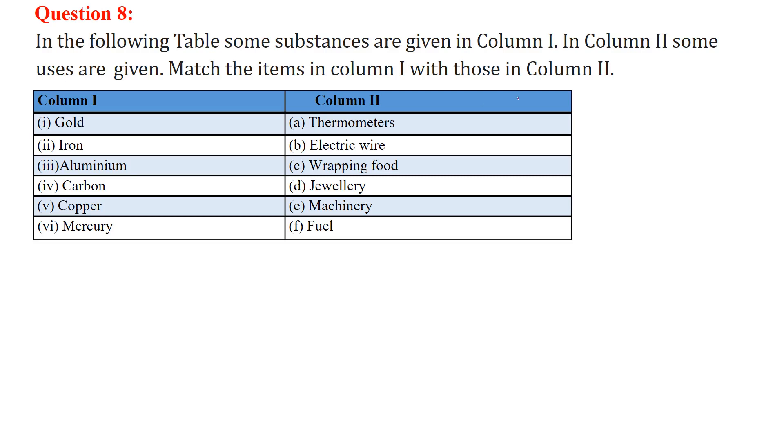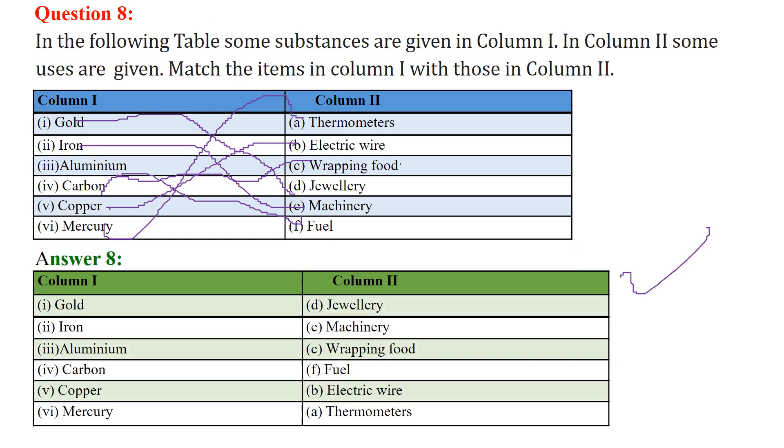In this we have to match the items or substances with their uses. So gold for jewelry, iron for machinery, aluminum for wrapping food, carbon for fuel, copper for electrical wires, mercury for thermometers. So this is the correct match.